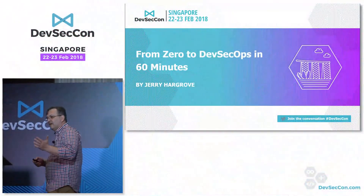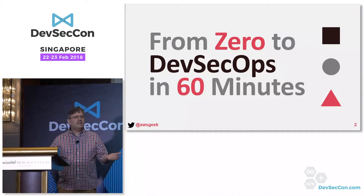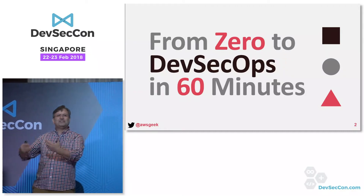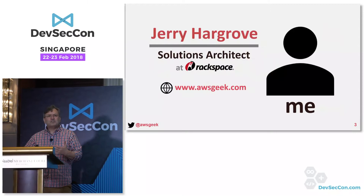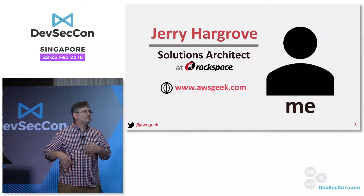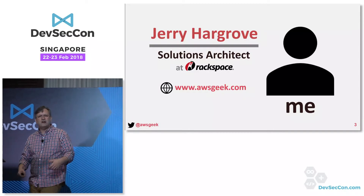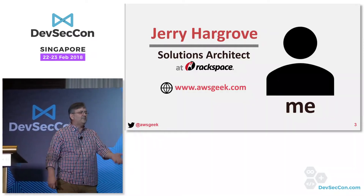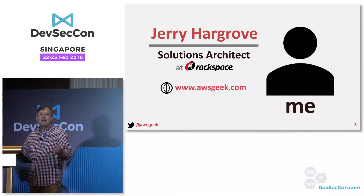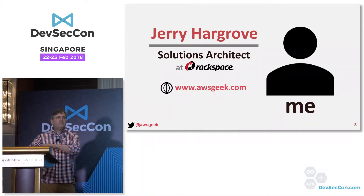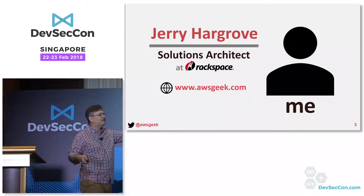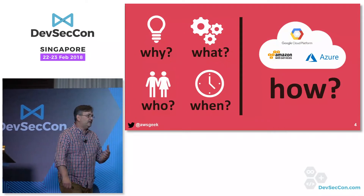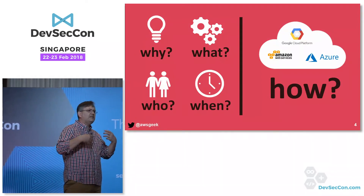My name is Jerry Hargrove. I'm going to talk today about from zero to DevSecOps in 60 minutes. Obviously I don't have 60 minutes, so I'm going to expedite some of it. I'm a solutions architect at Rackspace. I work with a lot of customers who are building out new infrastructure in the cloud, in particular AWS. My Twitter handle is awsgeek, my website is awsgeek.com. Today I'm going to talk about DevSecOps and getting there very quickly.